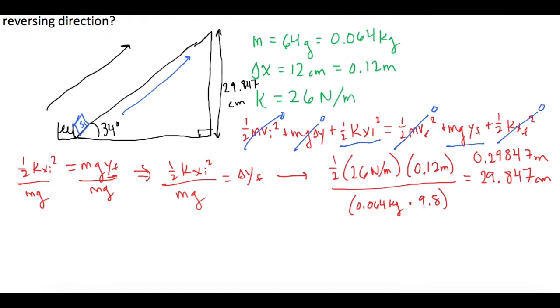So we have 29.847 is opposite with respect to our 34, so we're going to use sine. So we have sine of our angle, which is 34, equals our opposite, which is 29.847 centimeters divided by the hypotenuse.